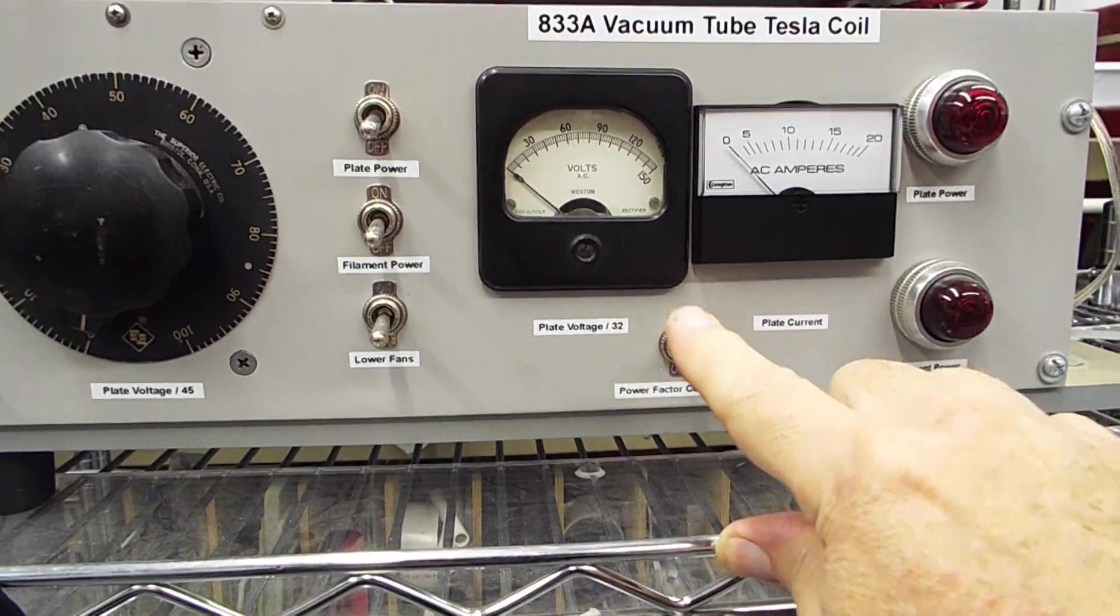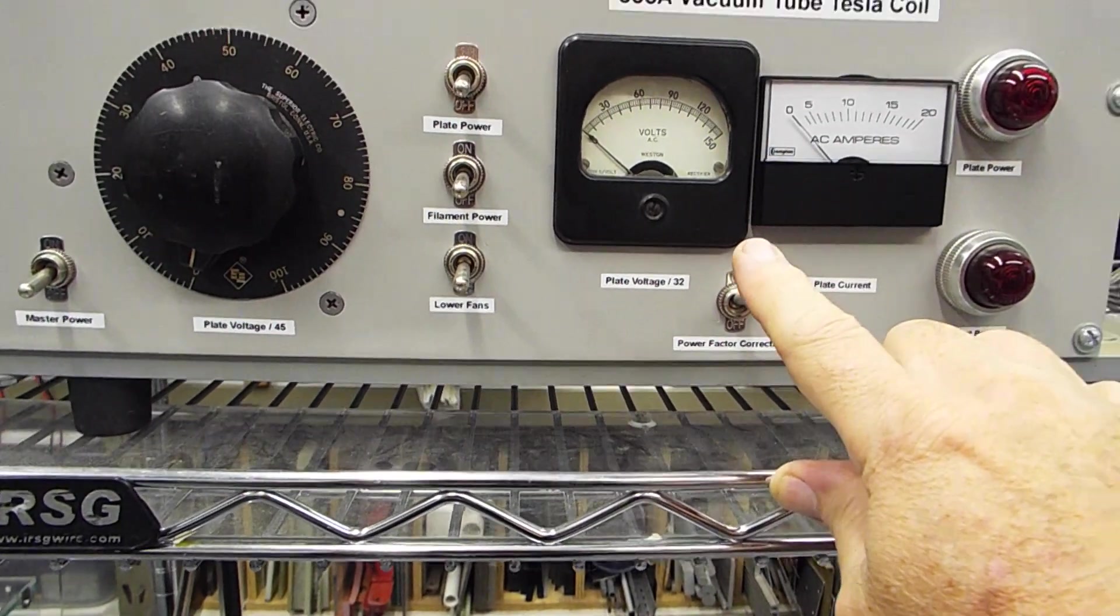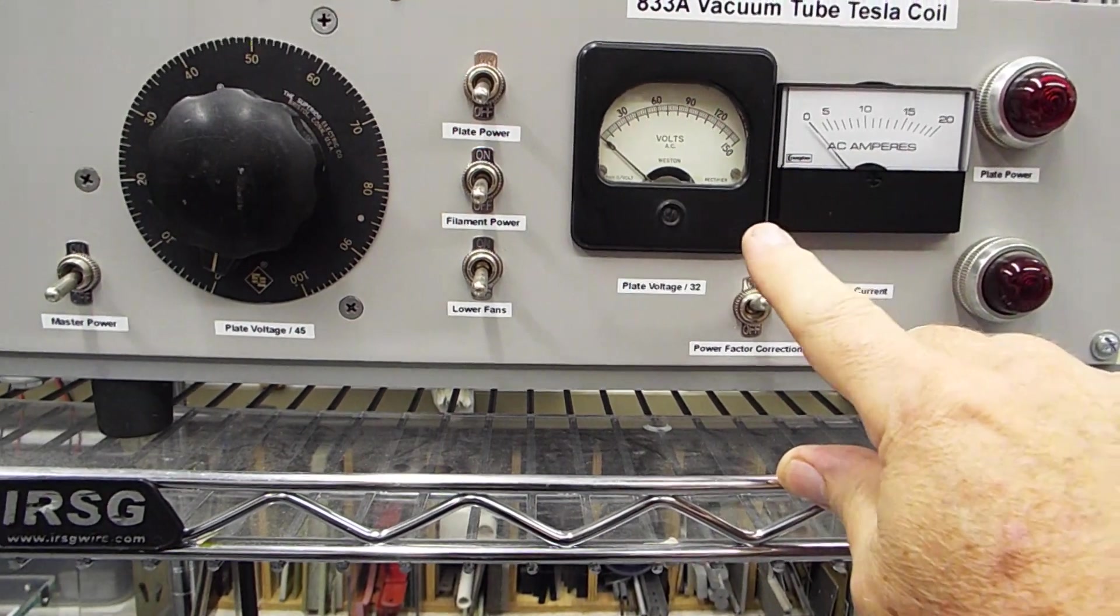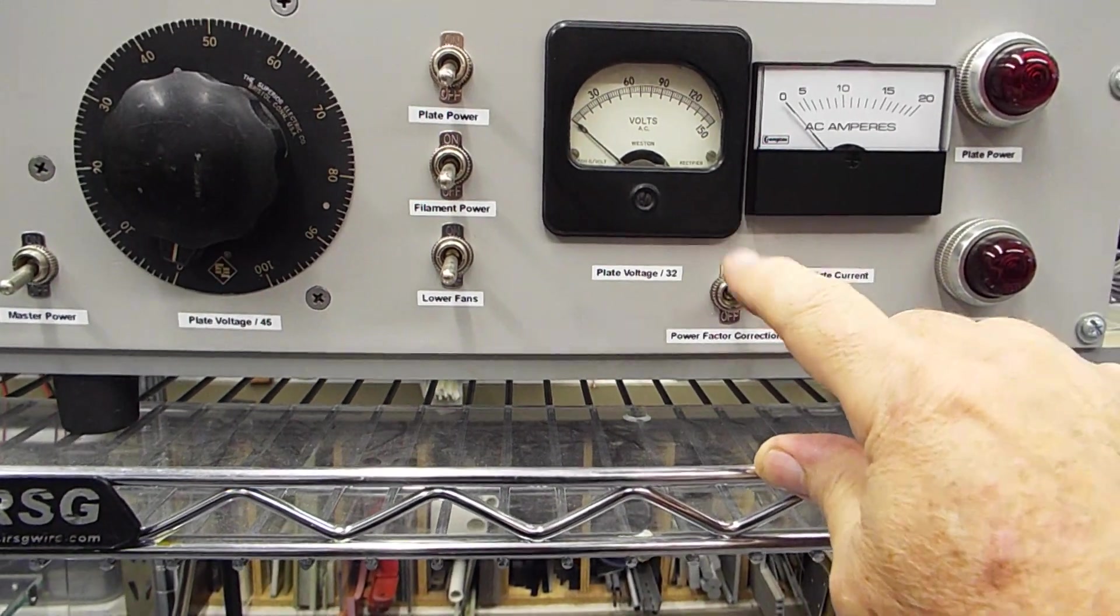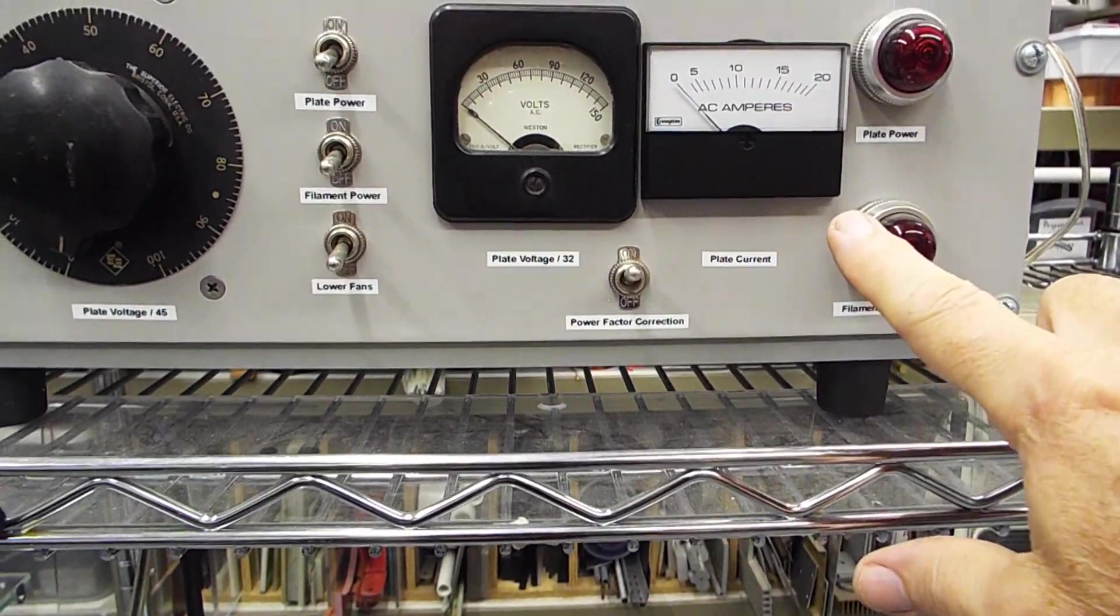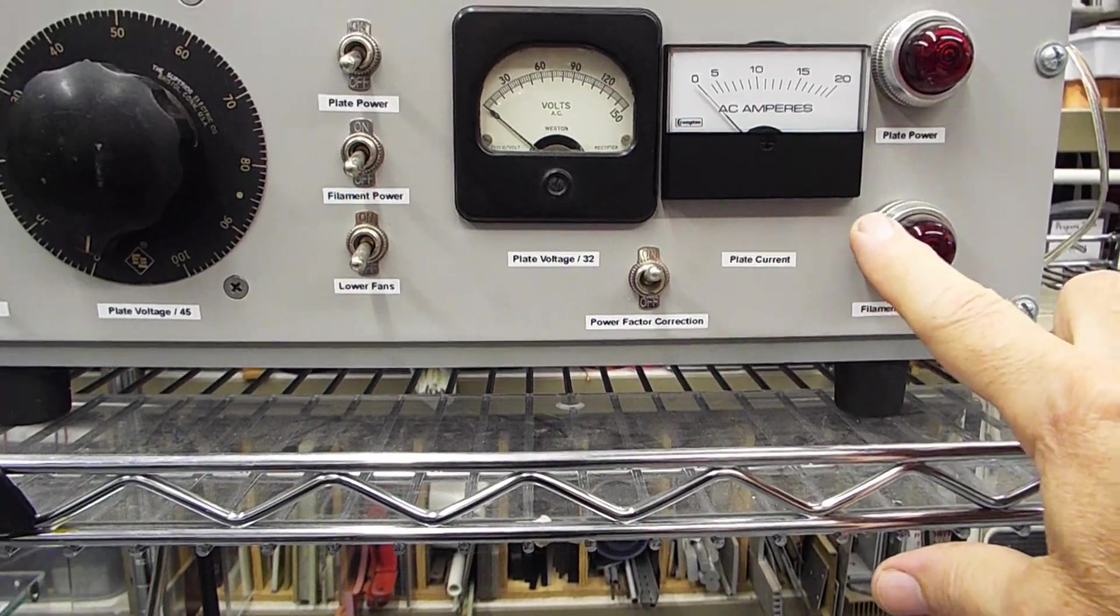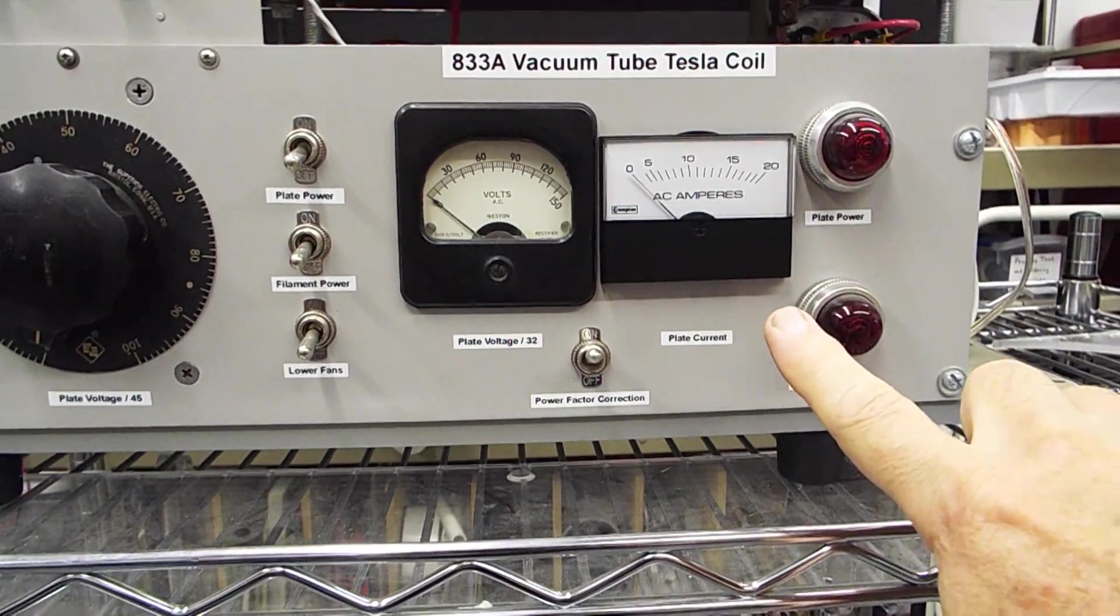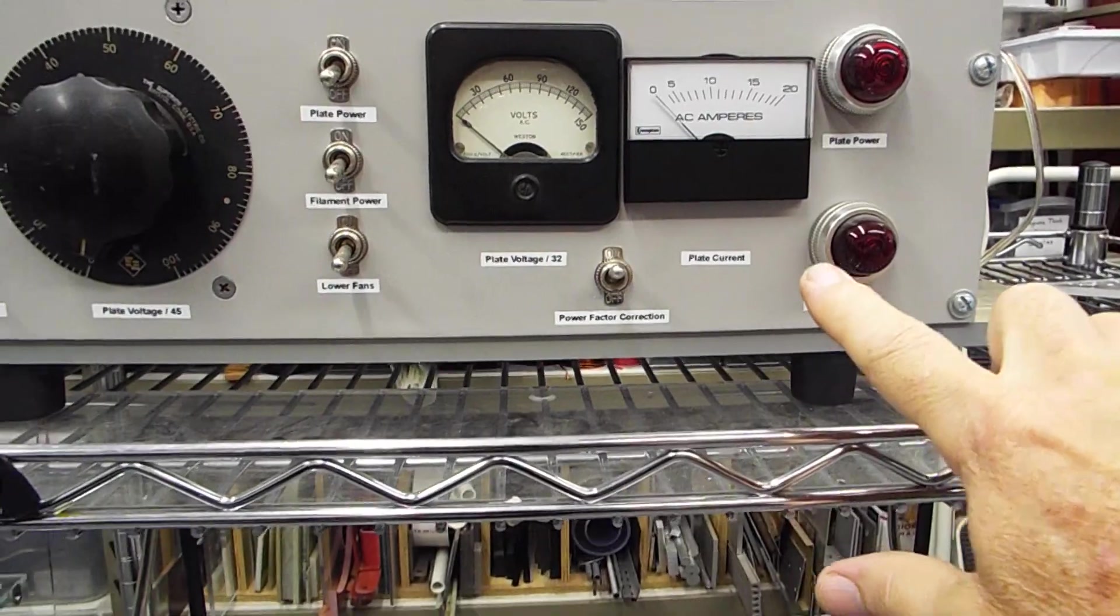This meter here is the plate voltage divided by 32, because this is actually the voltage into the microwave oven transformer. And this is the plate current, which again is actually the current into the primary coil of the microwave oven transformer.